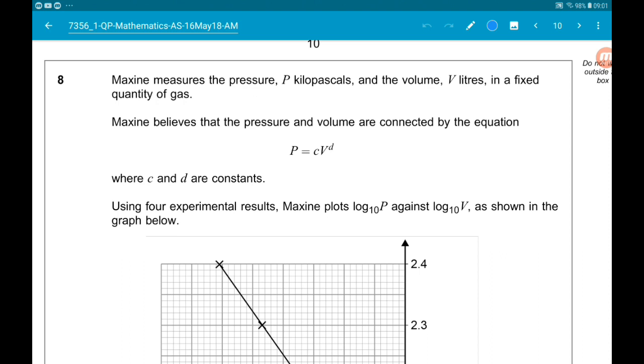Maxine measures the pressure P in kilopascals and the volume V in liters of a fixed quantity of gas. She believes that P and V are connected by an equation of the form P equals cV to the d, where c and d are constants.